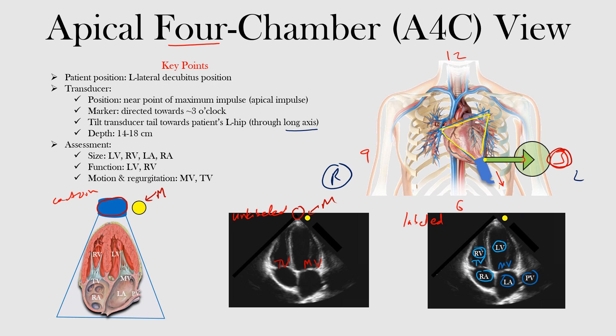Let's recap. For the apical four-chamber view, we're moving the transducer from the left sternal border at the third or fourth intercostal space to the apical impulse, near the point of maximal impulse or PMI. We want the marker directed towards three o'clock, tilt it down towards the patient's left hip, and get the long-axis view of the heart. Depth can be between 14 and 18 centimeters — adjust based on the patient. The patient remains in the left lateral decubitus position, unchanged from the parasternal long or short-axis view.